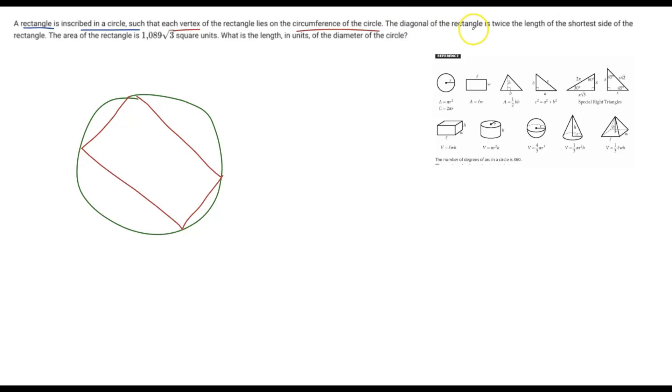It says the diagonal of the rectangle is twice the length of the shortest side of the rectangle. All right, let's draw that in. So the diagonal is going to look like this, just going across from one corner to the other, and it's going to be twice the length of the shortest side of the rectangle. So this right here is our shortest side. Let's just label that X. And it's twice the length, so we can call this 2X. Therefore that is twice the length.